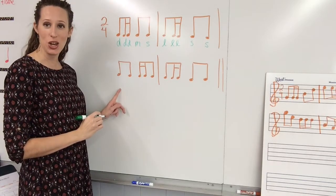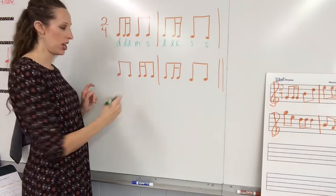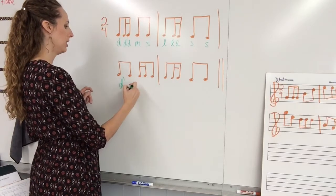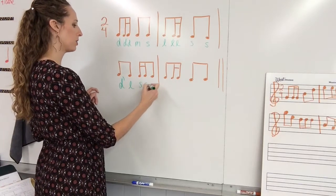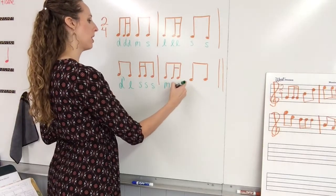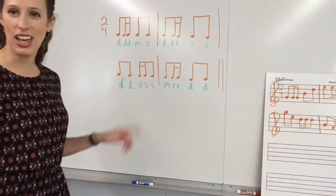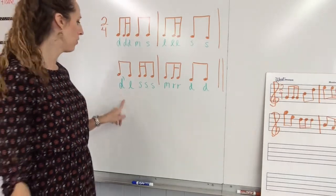Here it comes. Our high doe has the apostrophe. You have to draw your high doe, doe with an apostrophe. La, so, so, so, mi, re, re, do, do.